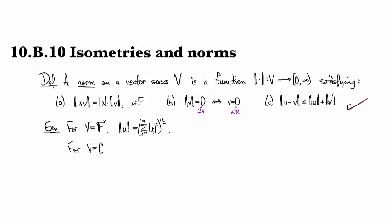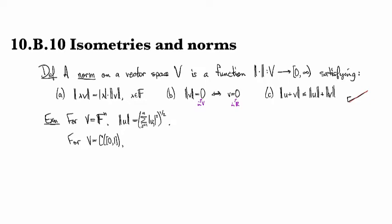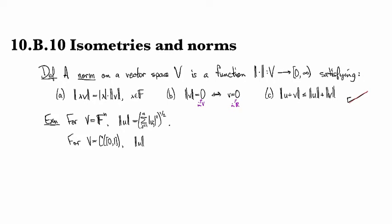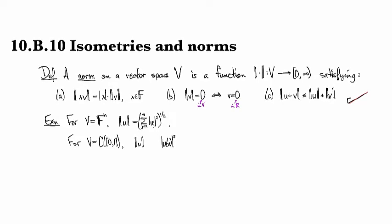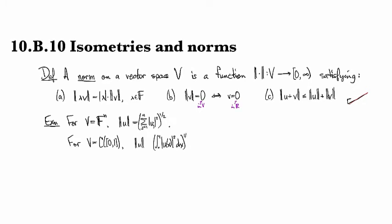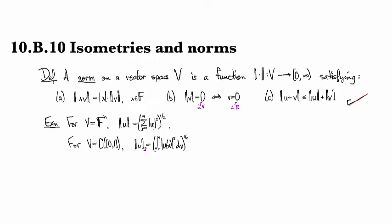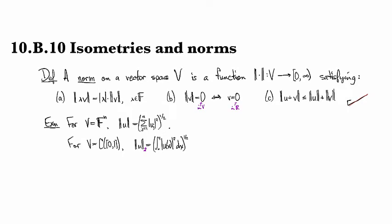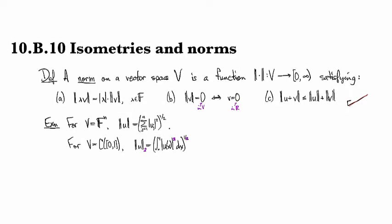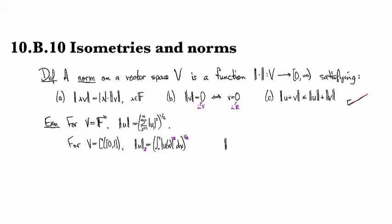If we are looking at the continuous functions on the unit interval, for example, then another common thing to do is exactly the same thing. We take the magnitude of u at x and we square it and then we sum it up and then we take the square root. That gives us a perfectly good notion of length. Sometimes this one is denoted with a subscript two to indicate that this corresponds to the power two that's going on up here. More generally you might have the p-norm.